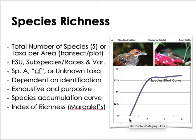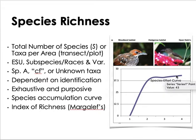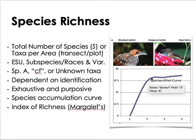Species richness is the number of species in an area. Biodiversity studies stop when the species accumulation curve reaches a plateau, meaning no new species are being added from one sampling day to the next. When this plateau is reached, the recorded number of species represents what is actually present in that community.